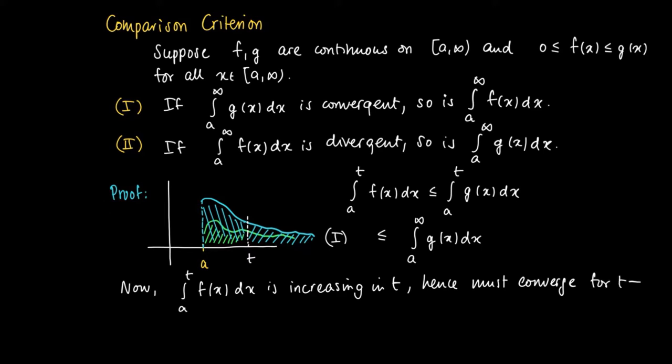The number which is the integral from a to infinity g(x)dx. Just like the monotonic convergence for sequences, the integral from a to t f(x)dx should converge. It's increasing but bounded, so there should be a value where it's running into.